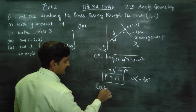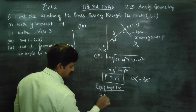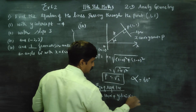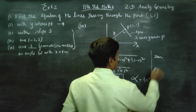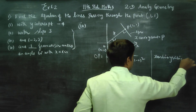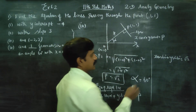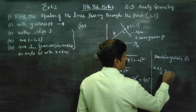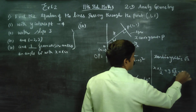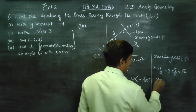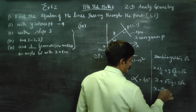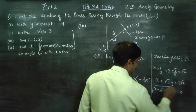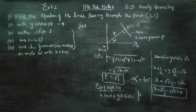Therefore, the required equation is x·cos 60° + y·sin 60° = √2. Substituting: cos 60° = 1/2, sin 60° = √3/2, so x/2 + (√3/2)y = √2. Multiplying by 2: x + √3y = 2√2. Therefore, x + √3y − 2√2 = 0 is the equation of the straight line. We now have 4 varieties — 3 from 10th standard and the last one is a new concept from 11th standard.